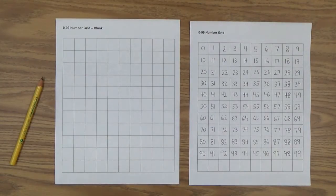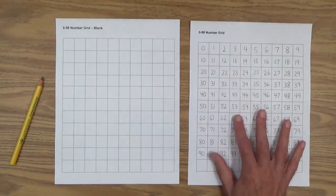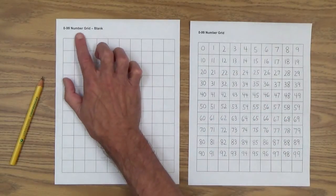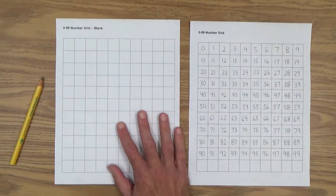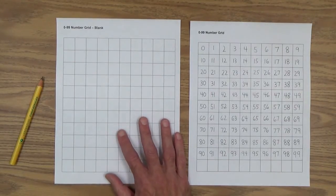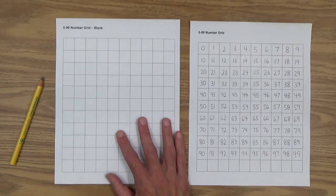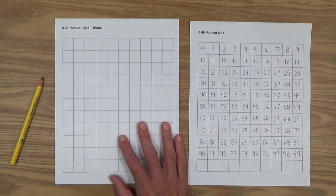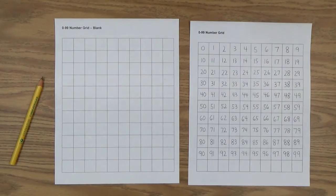And welcome to lesson 22, number writing 0 to 99. Materials: You will need a pencil and three printables from the early gifted manual. The first is the 0 to 99 number grid filled in and the 0 to 99 number grid that is blank. Make a few of those copies, maybe three or four, and also handwriting paper.